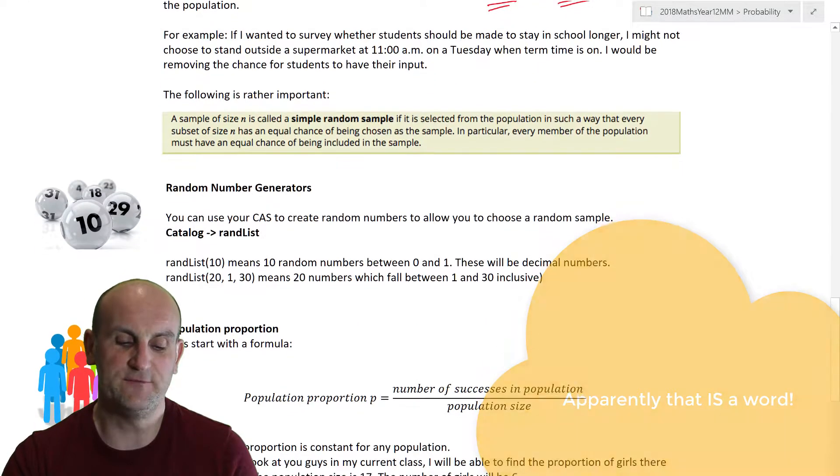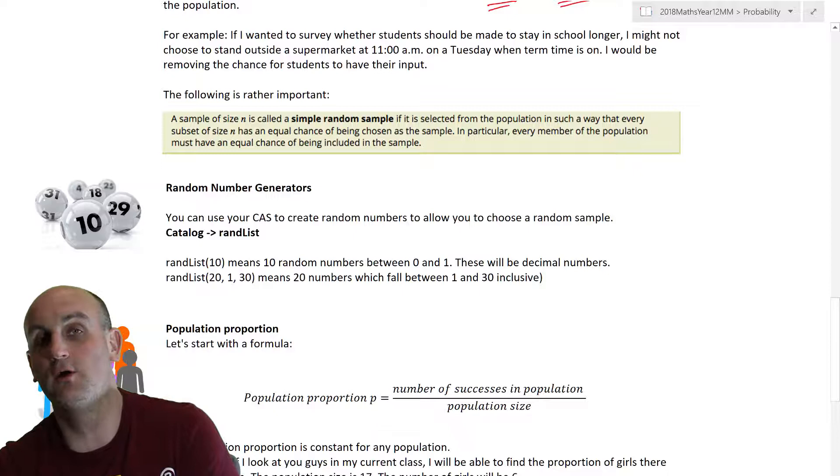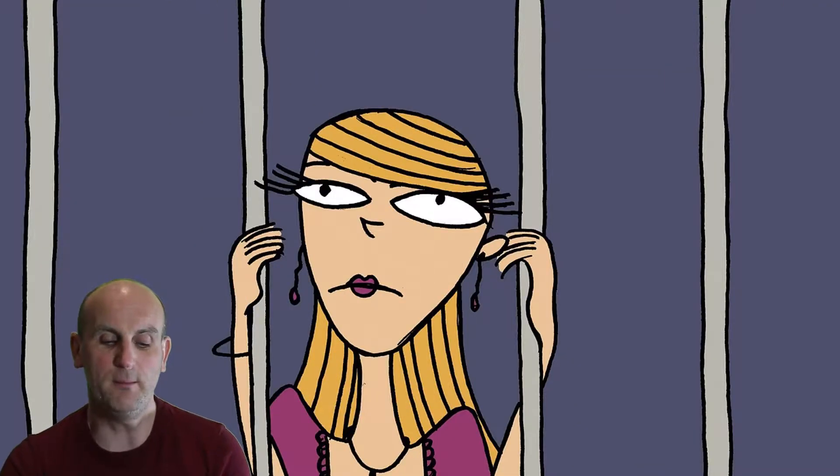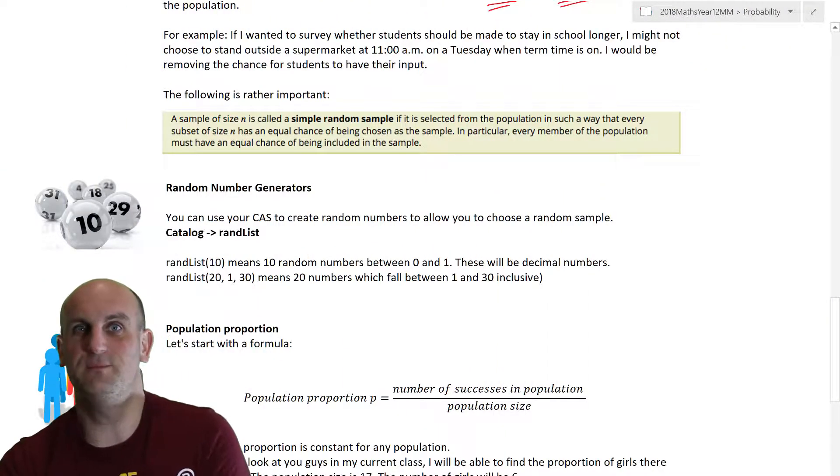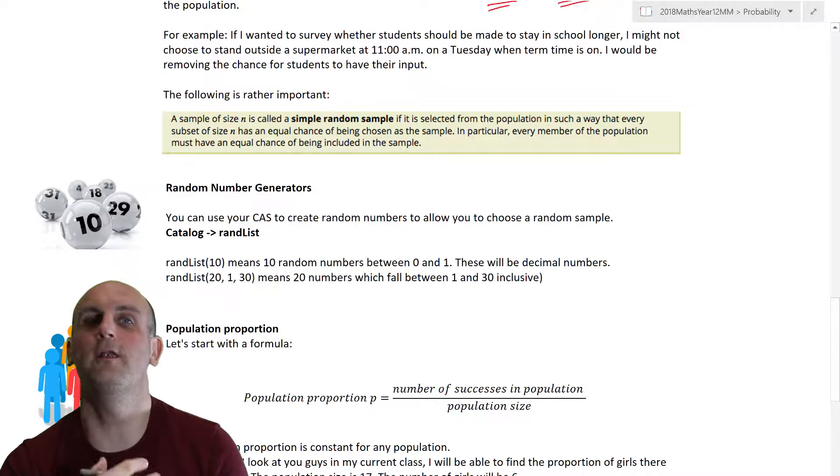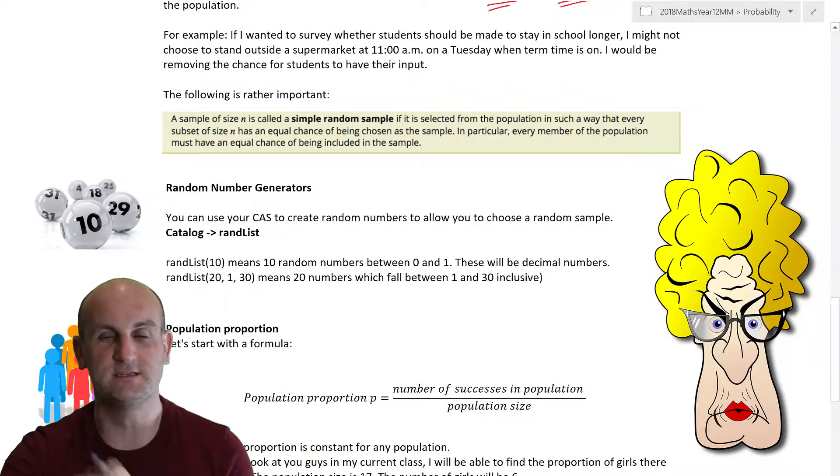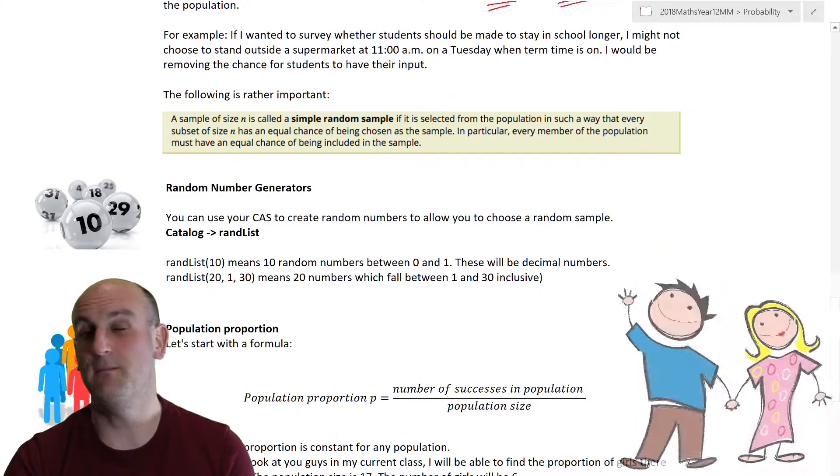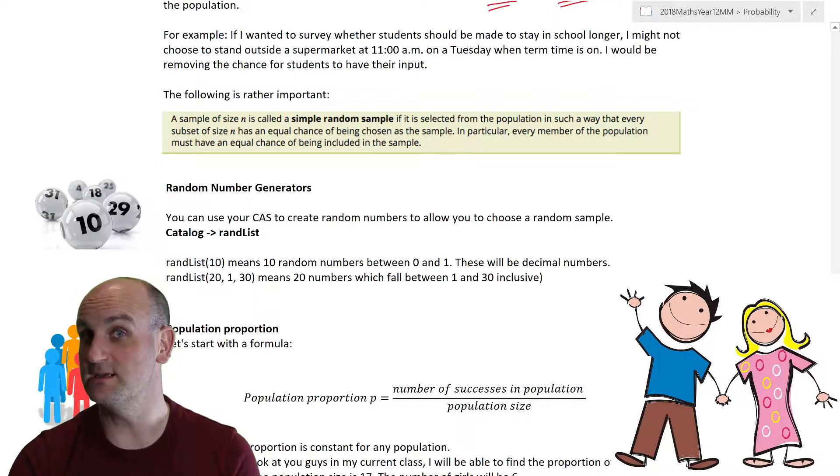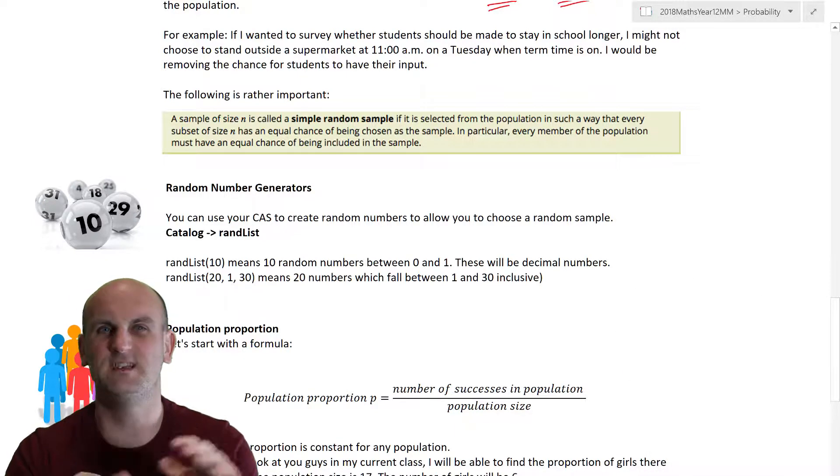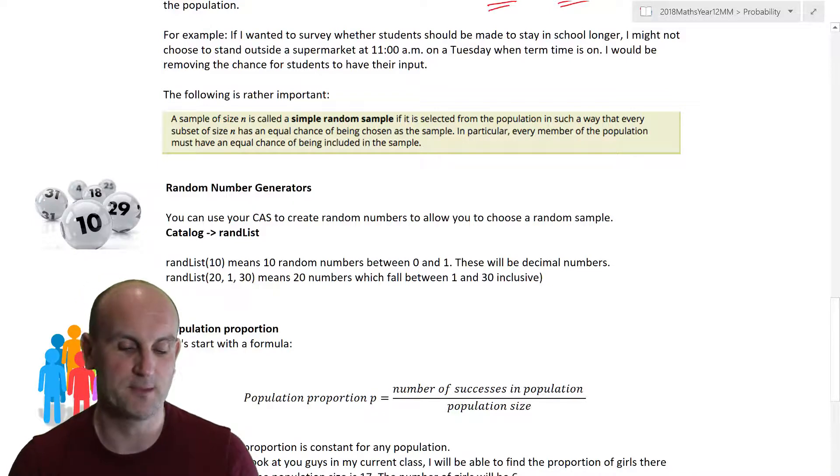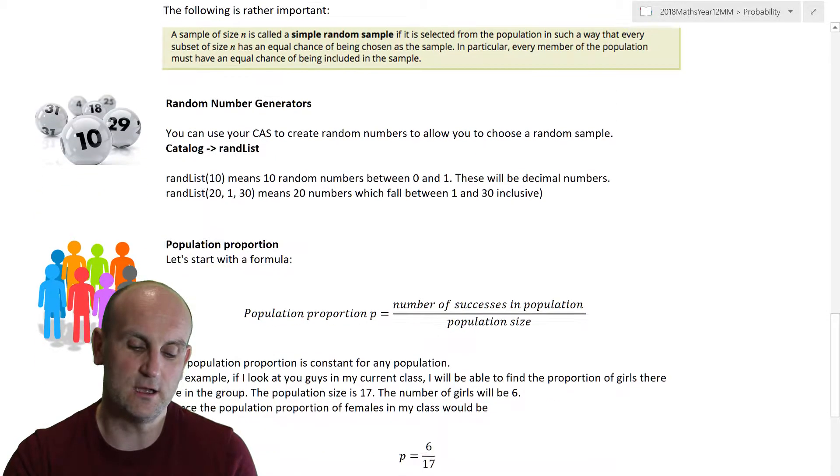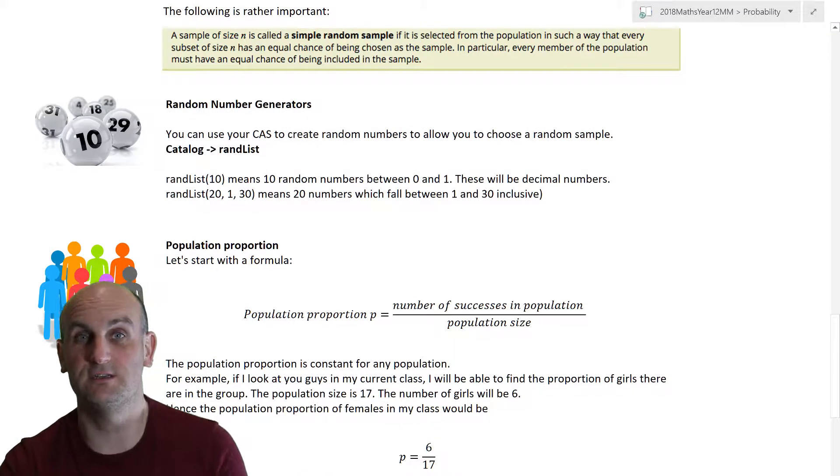Trying to choose a random sample actually isn't necessarily all that easy. The key to choosing a sample, as it says here, is to make sure that it doesn't favour or disfavour any subgroup of our population. So another example is if I wanted a survey whether students should be made to stay in school longer over the course of a year, I probably wouldn't choose to stand outside the supermarket at 11 a.m. on a Tuesday when term time is on. Chances are, who goes to the supermarket at 11 a.m. on a Tuesday? Well, old age pensioners and we love the old age pensioners. I'm going to be one soon or in fact probably already am one. Or parents. Now bearing in mind parents get four weeks holiday and students get 14 weeks holiday, you might see that they would be slightly biased in terms of what their opinion is going to be.